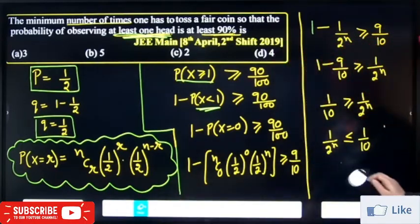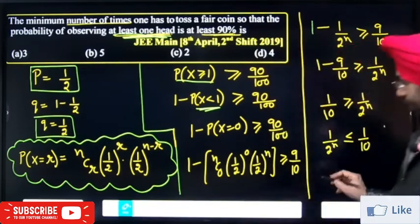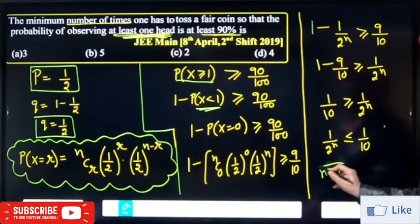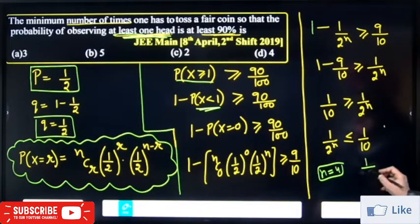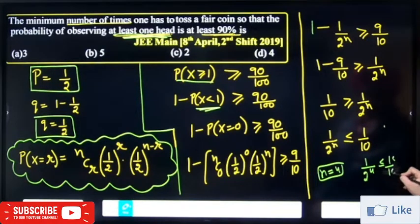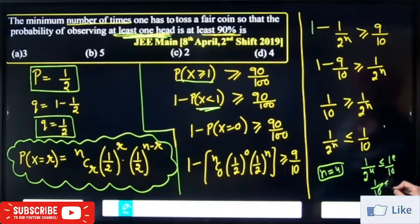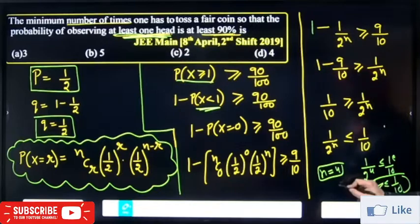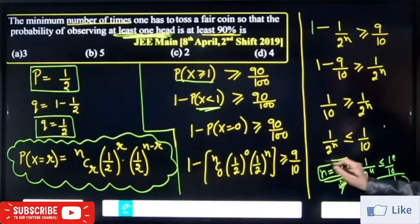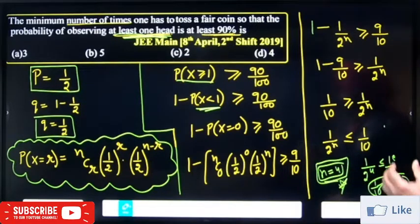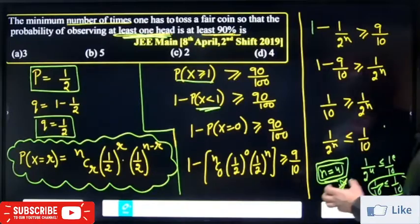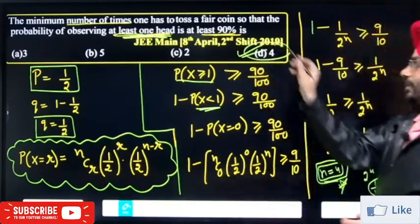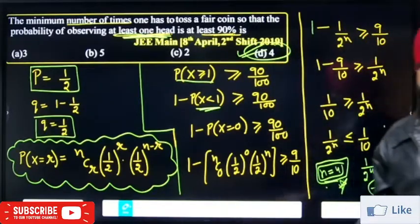If n = 4: (1/2)^4 = 1 by 16. Since 1 by 16 is less than 1 by 10, the condition is satisfied. Therefore, the minimum number of times you have to toss the pair of coins is n equal to 4. Thank you.